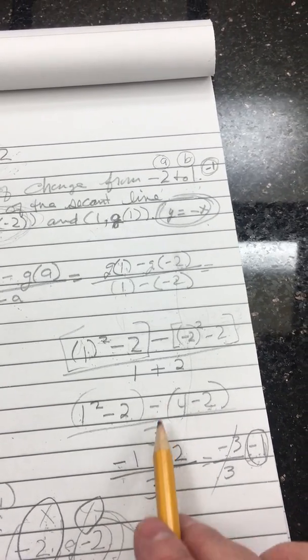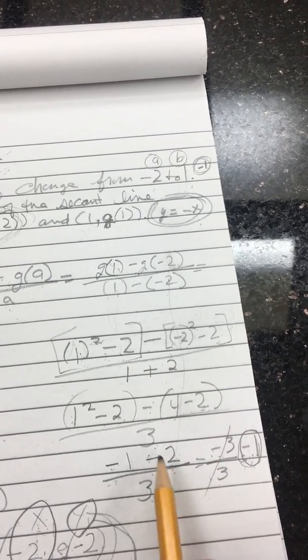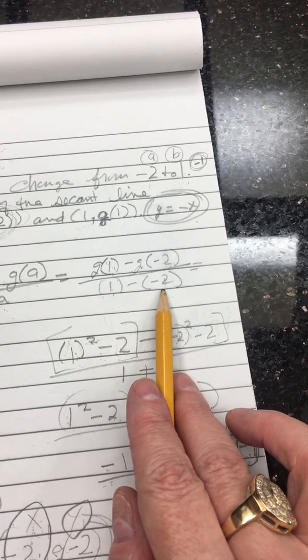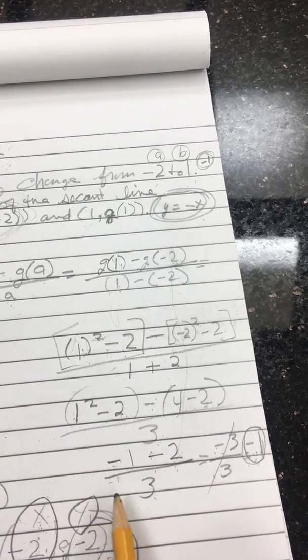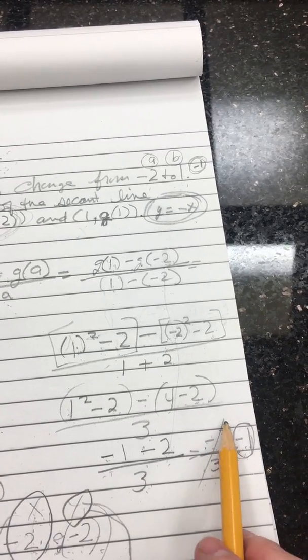So you've got a negative 1 minus a positive 2. So you end up with a negative 3 all over the 1 plus 2, because you had a 1 minus a negative 2 is 1 plus 2 is 3. So you end up with 3 in the denominator, a negative 3 in the numerator.